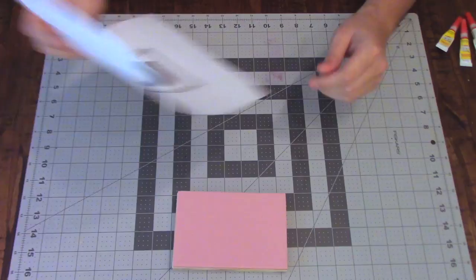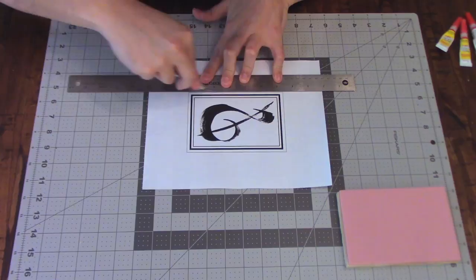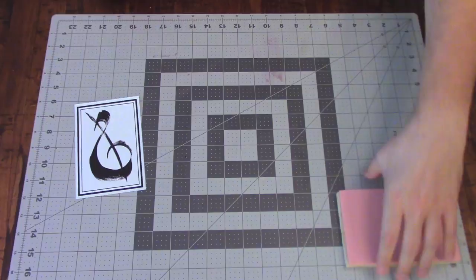The next step is deciding what design we will carve into the block. Traditionally, this would be a piece of music given to the engraver. Since my engraving skills are little to none, I decided to use this treble clef design to demonstrate with.